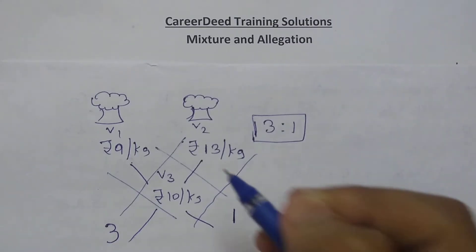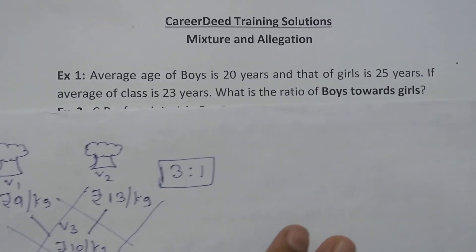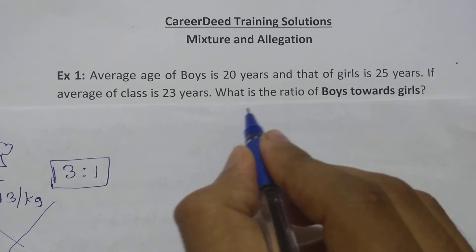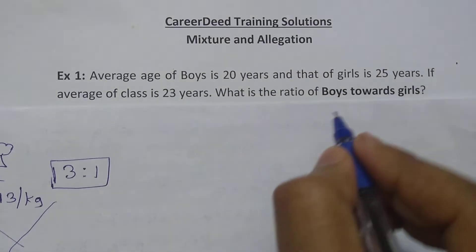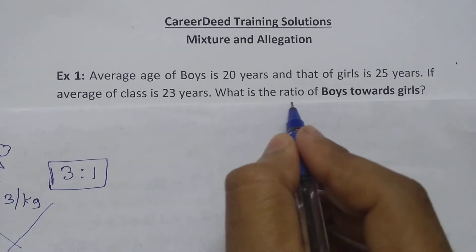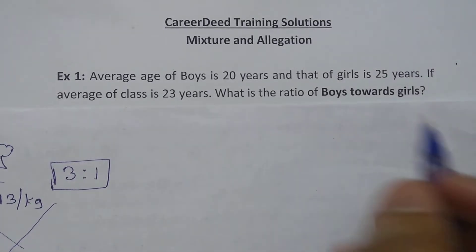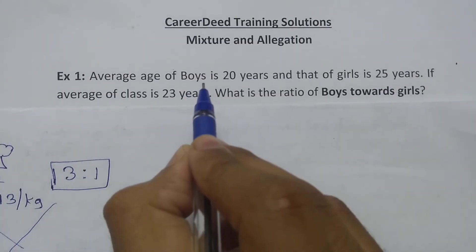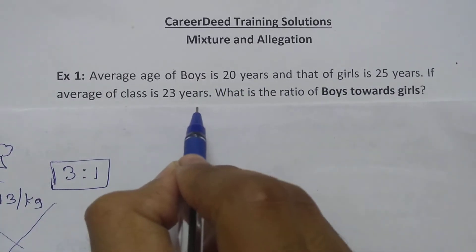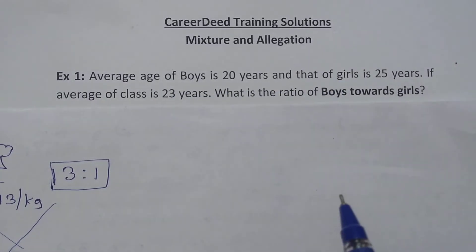Now let us enter into some problems. The first question is: the average age of boys is 20 years and that of girls is 25 years. If the average age of the class is 23 years, what is the ratio of boys to girls? In this question you don't know the total count of boys and girls or the total count of the class, but you know the average of boys is 20, girls 25, and the class 23 years.